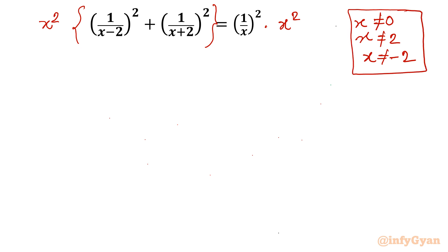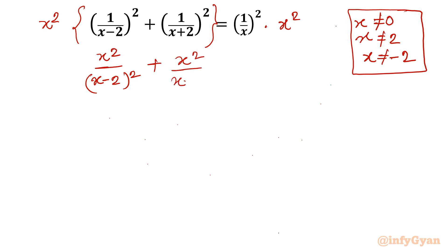Once we multiply both sides by x squared, the equation becomes x squared over (x minus 2) squared plus x squared over (x plus 2) squared equals 1.